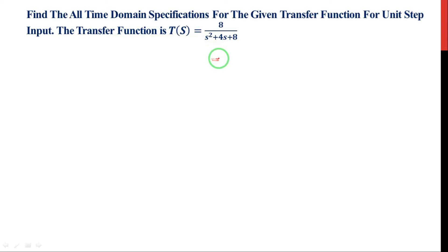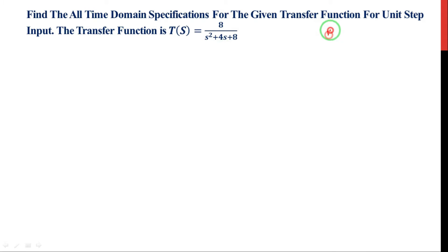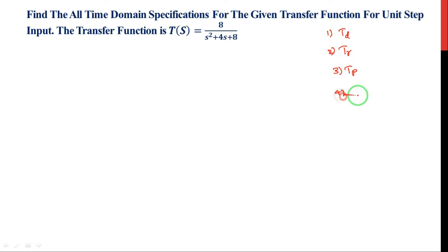What do we mean by all time domain specifications? In the previous lecture we derived the time domain specification formulas. The time domain specifications are: first, delay time indicated by TD; second, rise time TR; third, peak time TP; fourth, maximum peak overshoot denoted by MP; and fifth, settling time TS.